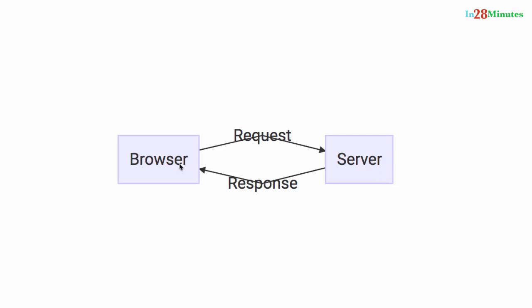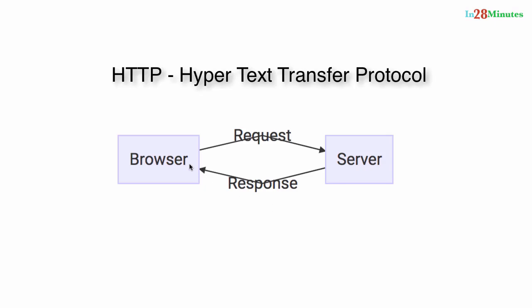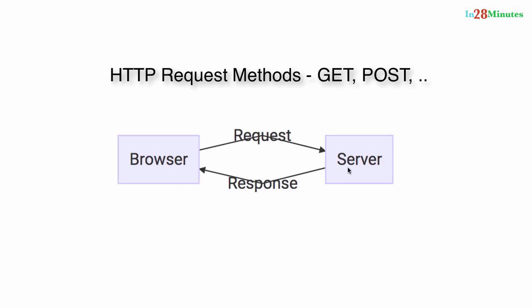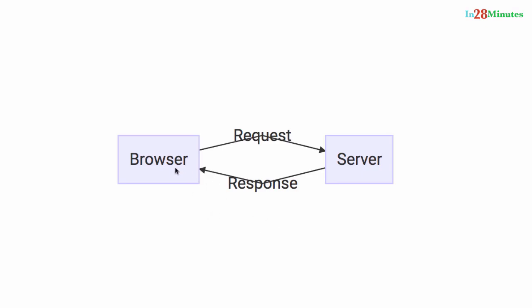When I enter a URL in the browser, a request is sent to the website server, and the server responds back with a response. The important thing we need to discuss is the format of this request and response. These requests and responses are in a format defined by HTTP — Hypertext Transfer Protocol. When I type in a URL, the browser sends a GET request to the server, and the server responds with an HTTP response containing the HTML. The browser then takes that HTML and displays it on the screen.